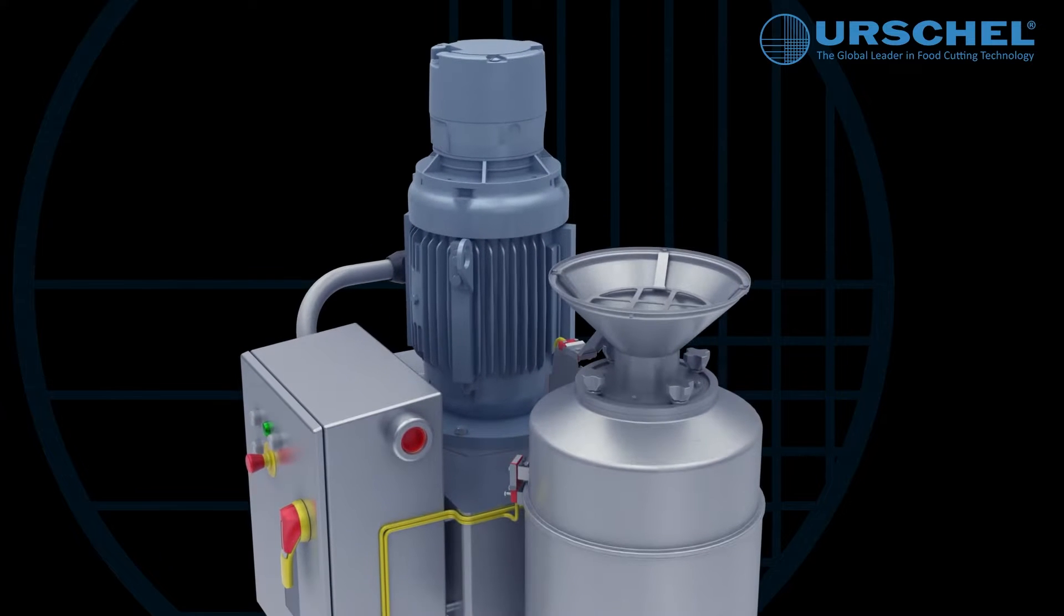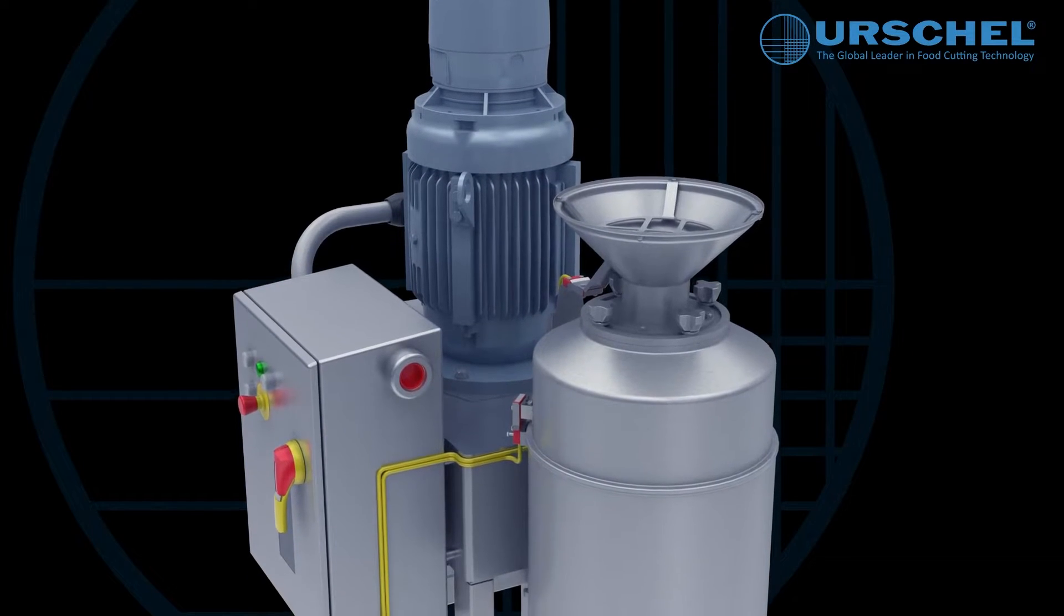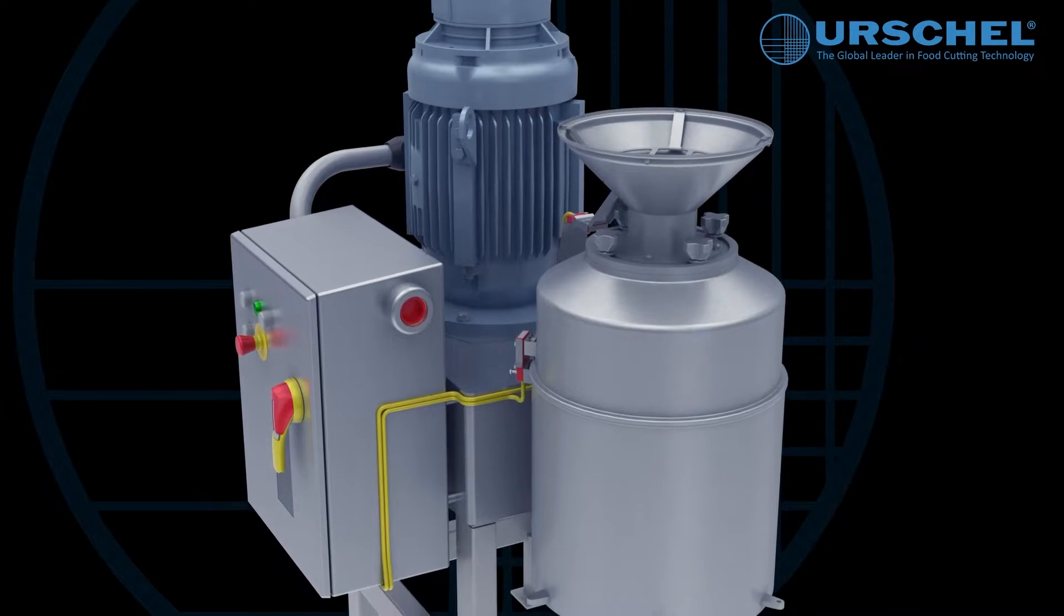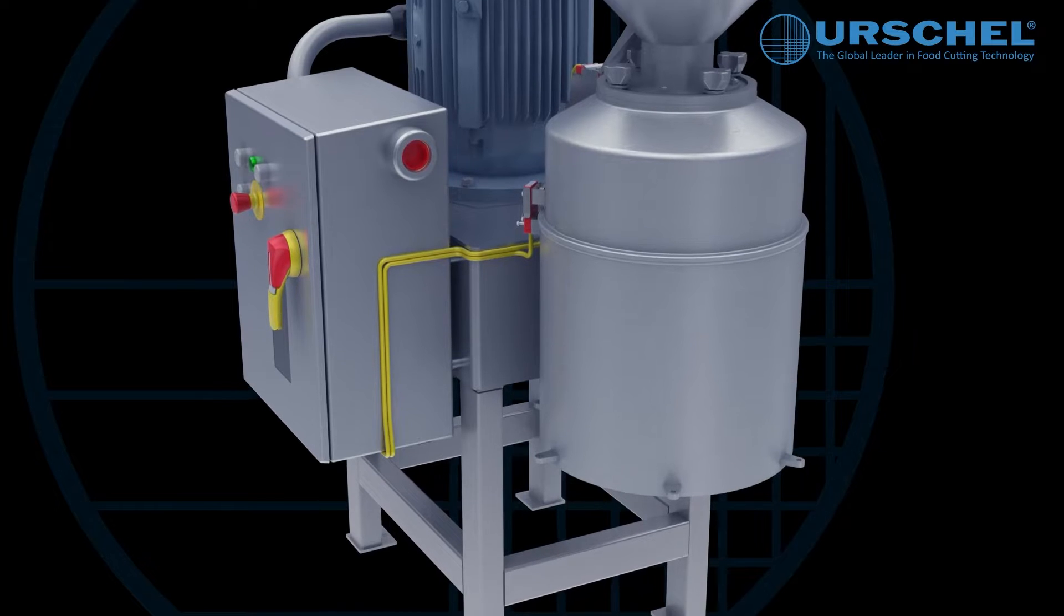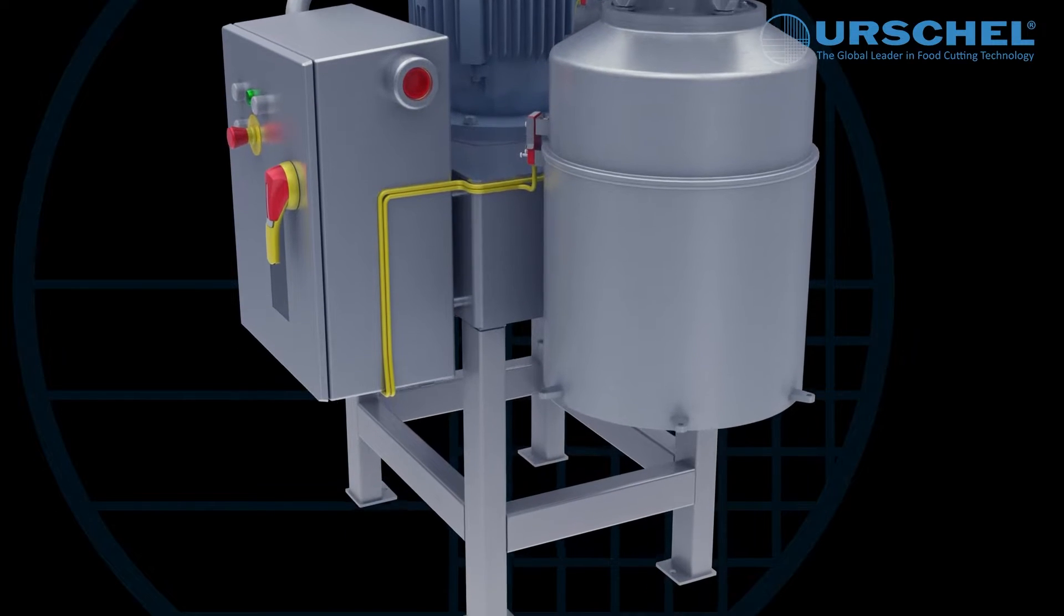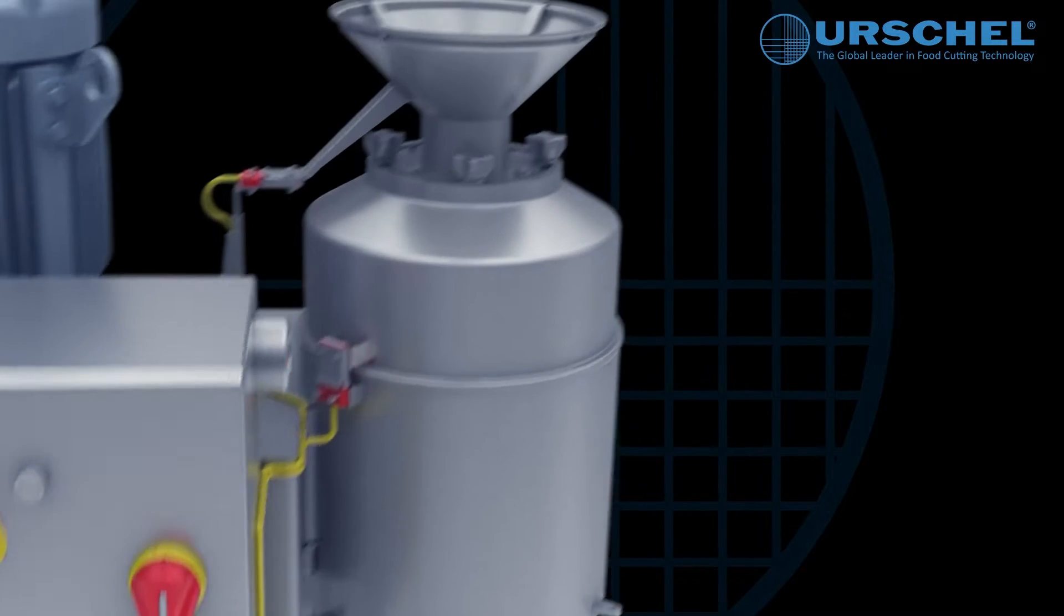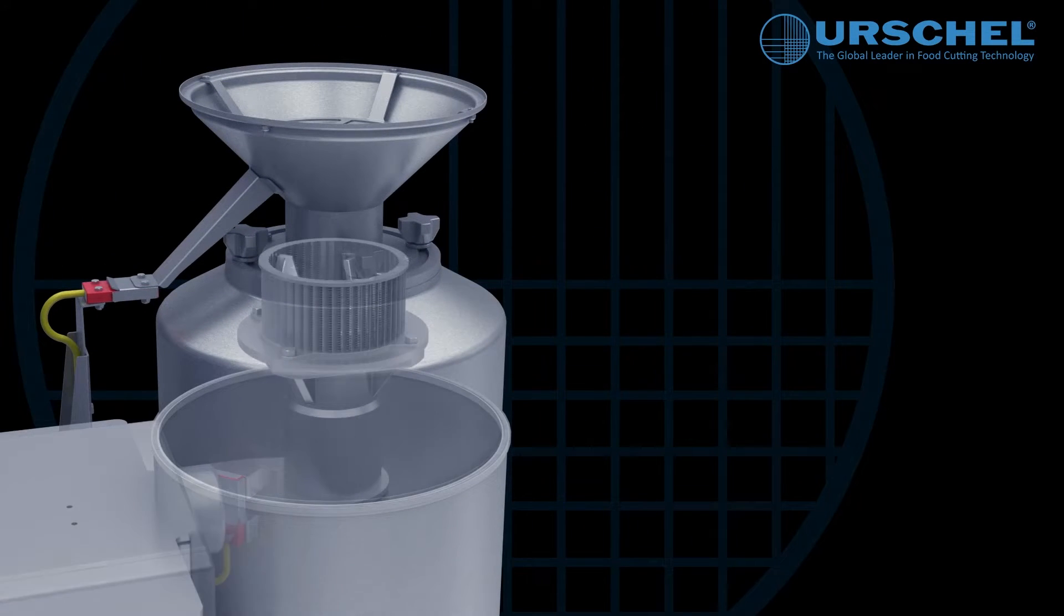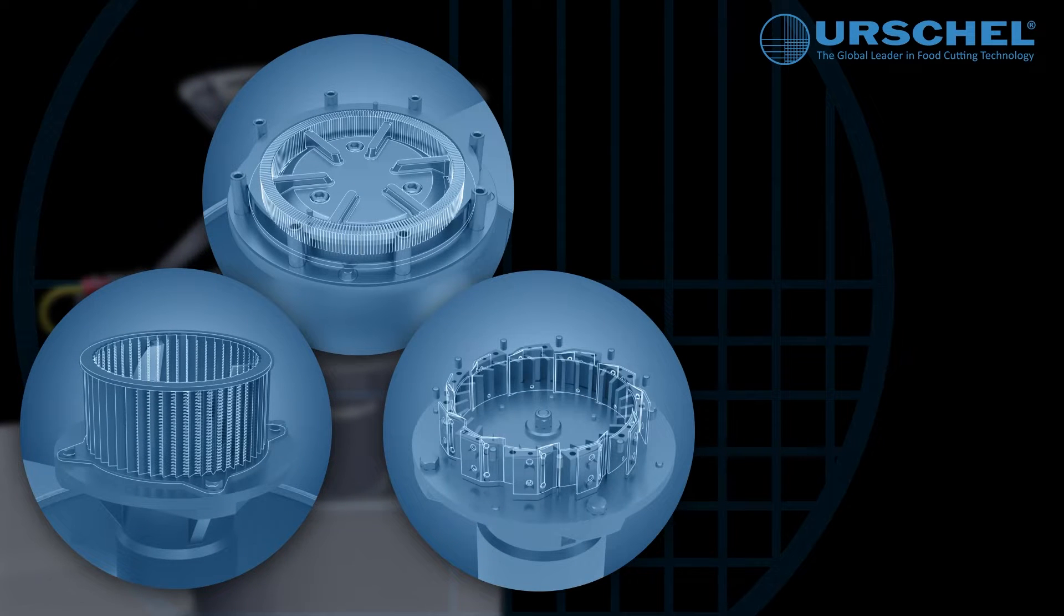The Model 1700 offers the most versatility in the Commitrol line while featuring a continuous single-pass operation with no operator adjustments. Its stainless steel construction and other corrosion resistant materials provide simplified cleanup and sanitary operation. It is the only model in the Commitrol line that accommodates all three reduction heads for maximum versatility.